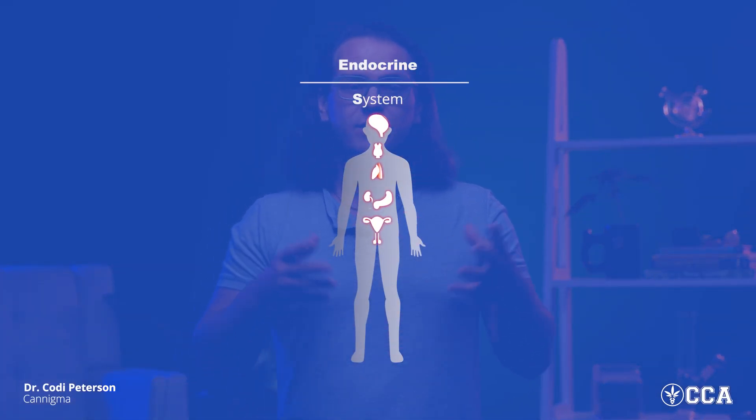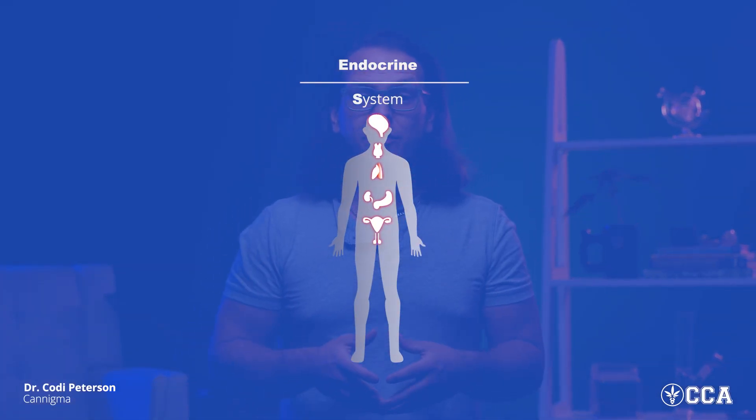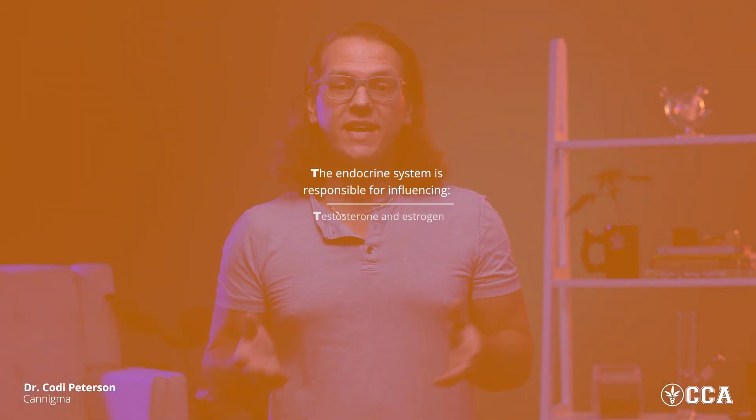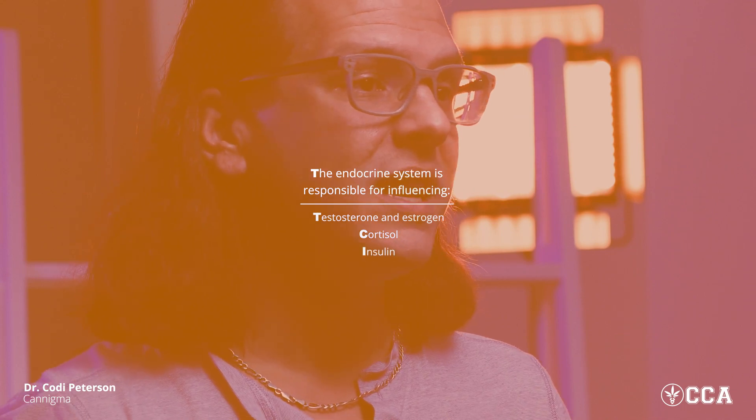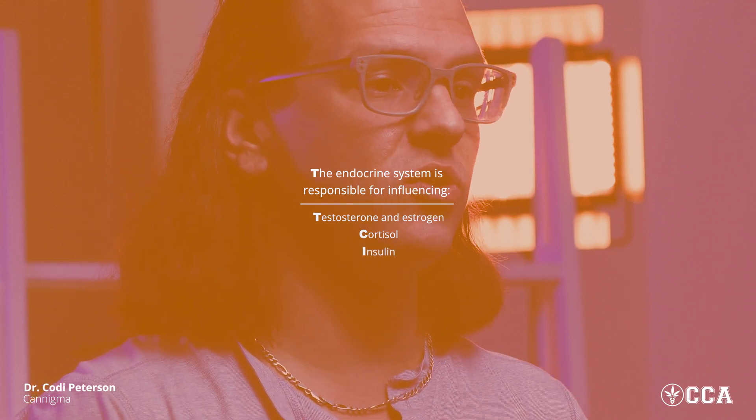Moving on to the endocrine system, which is a large system throughout the body responsible for making all of your hormones. It includes your thyroid, your pituitary, and your adrenal glands. The endocannabinoid system is intertwined with this system and is responsible for influencing sex hormones like testosterone and estrogen, stress hormones like cortisol, and even glucose-related hormones like insulin.